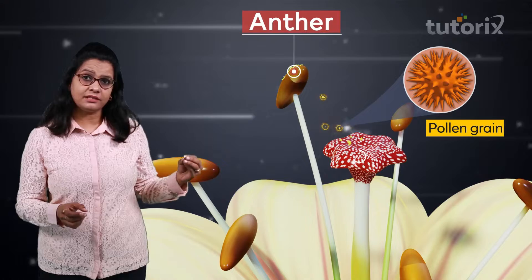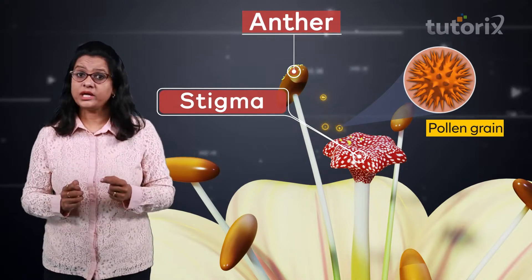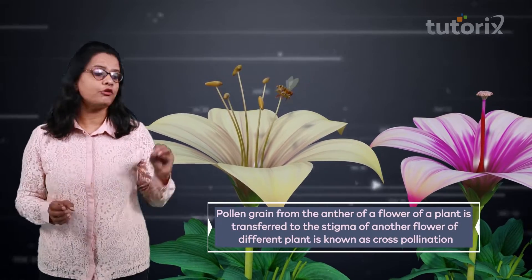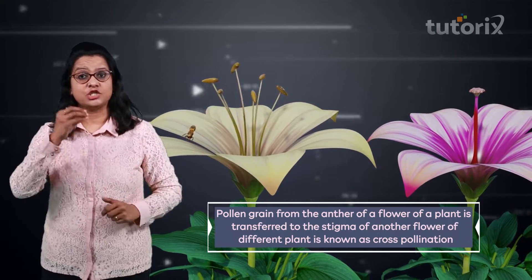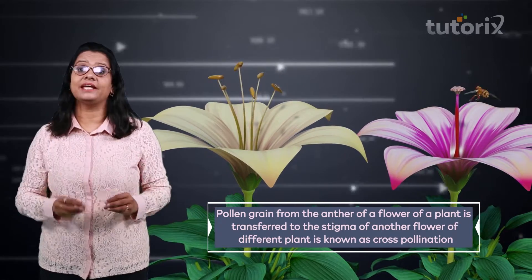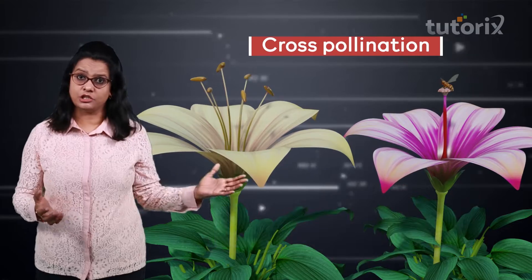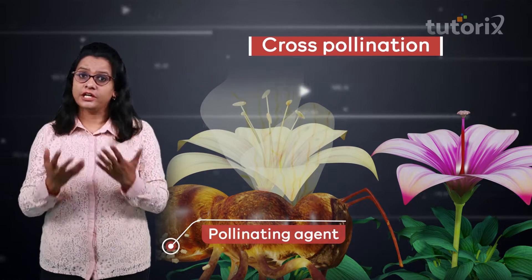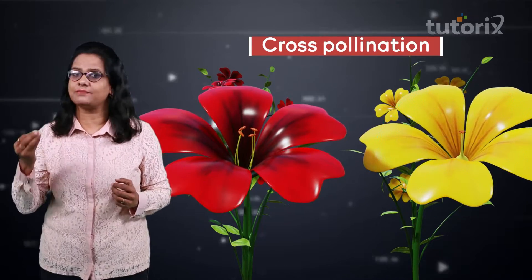Pollination is nothing but the transfer of pollen grains from the anther to the stigma — either of the same flower, which is self-pollination, or of different flowers. The process in which a pollen grain from the anther of a flower of one plant is transferred to the stigma of another flower of a different plant is called cross-pollination, and the transfer occurs by means of a pollinating agent or an external agent.